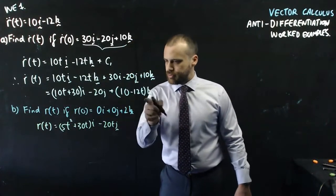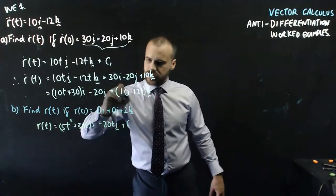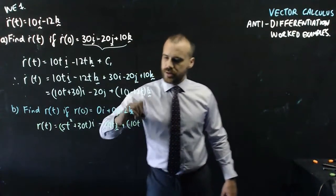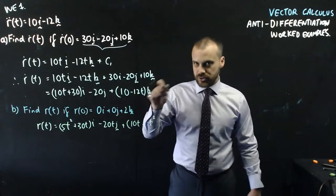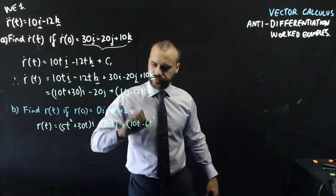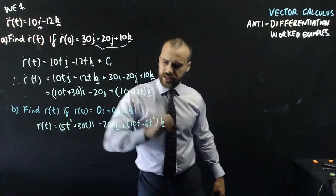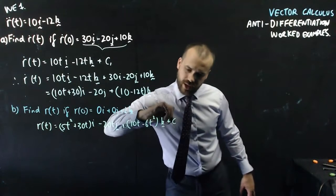And then this bit here is going to be 10t minus, that's going to be t squared. Negative 12 divided by 2 is going to be negative 6. And that's going to be k. And then don't forget your plus c.